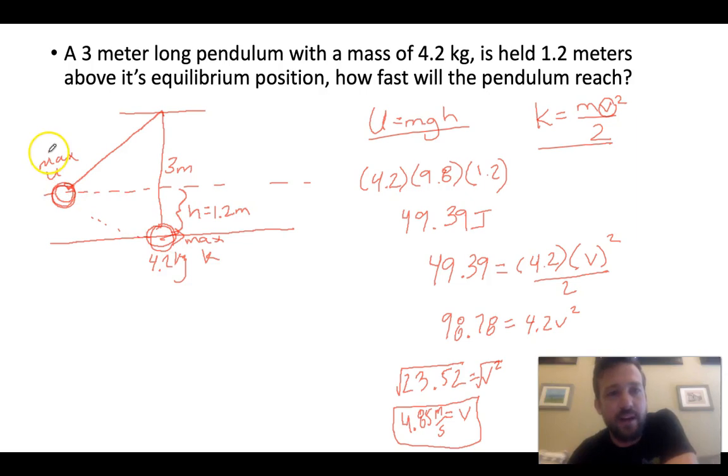So you multiply by 2, so that times 2 would give you 98.78 equals 4.2 v squared. You divide by 4.2. So that divided by 4.2 gives us 23.52 equals v squared. And then you just square root to get rid of that squared. And if you square root, you come out with a velocity of 4.85 meters per second. And that's the velocity it has when it goes through this position right here, because it's translated all its potential energy to the kinetic energy.